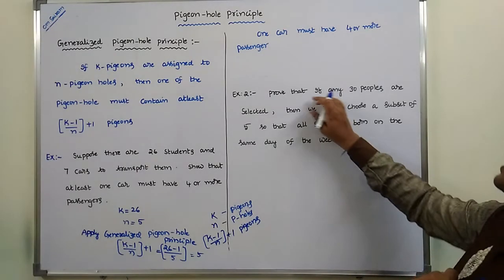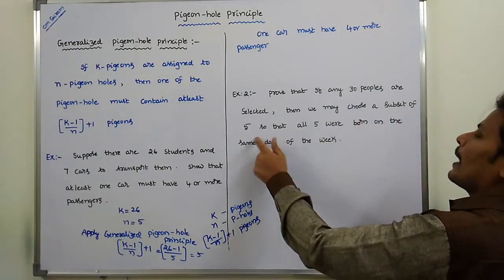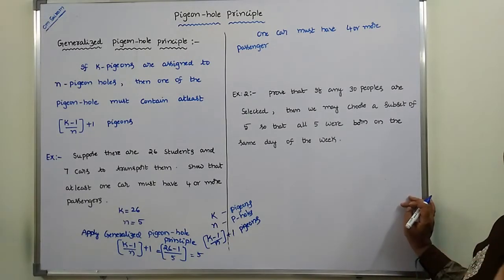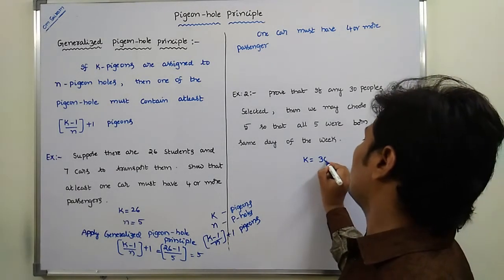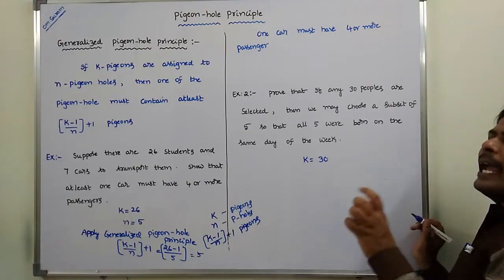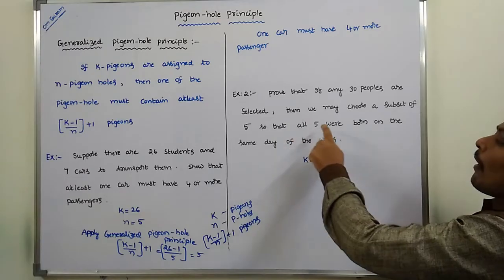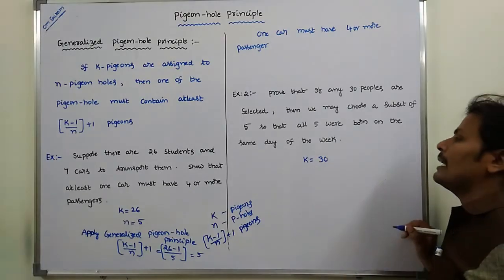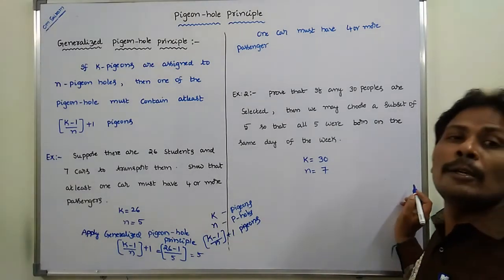Second problem: prove that if any 30 people are selected, we can choose a subset of 5 such that all 5 were born on the same day of the week. Here, 30 people are the pigeons, so k equals 30. The days of the week are the pigeon holes, so n equals 7.